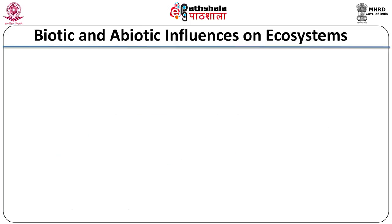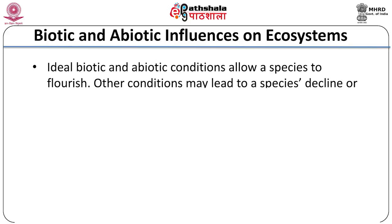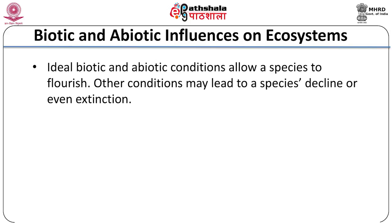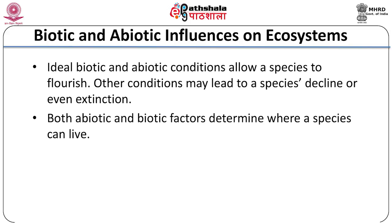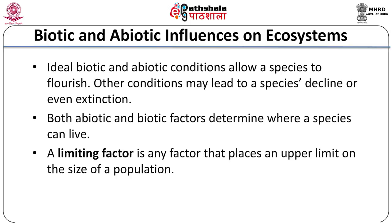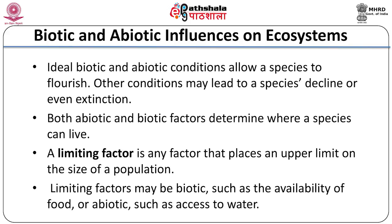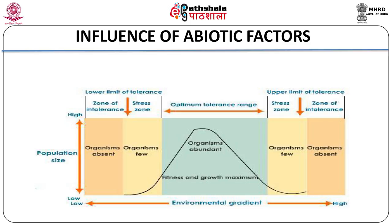Biotic and abiotic influences on ecosystem: ideal biotic and abiotic conditions allow a species to flourish, while other conditions may lead to a species' decline or even extinction. Both abiotic and biotic factors determine where a species can live. A limiting factor is any factor that places an upper limit on the size of a population. Limiting factors may be biotic, such as the availability of food, or abiotic, such as access to water. Human influences often act as limiting factors too. Abiotic factors such as temperature, light, and soil can influence a species' ability to survive.